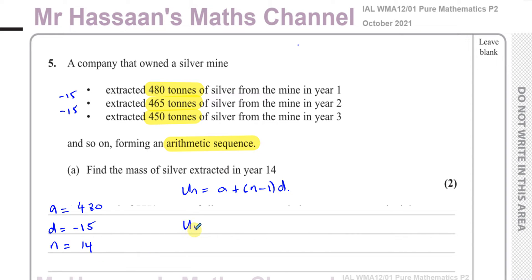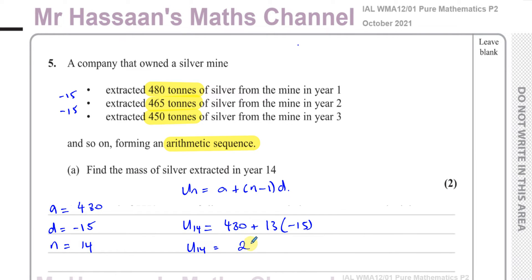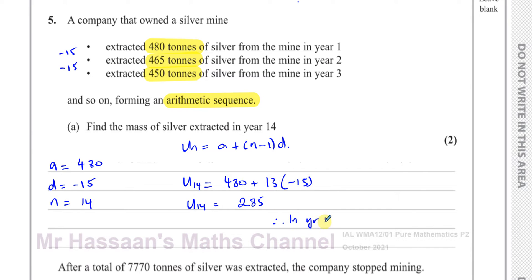Substituting into the formula: the 14th term = 480 + (14 − 1) × (−15) = 480 + 13 × (−15). Using a calculator, that gives us 285. So in year 14, 285 tons were extracted. When you write your answer down, you must mention the unit — tons. Very important.